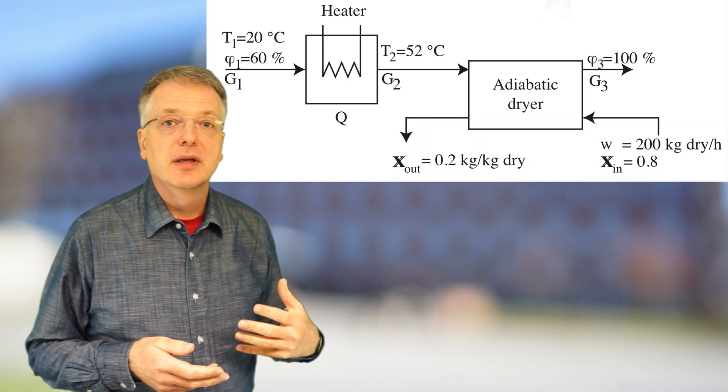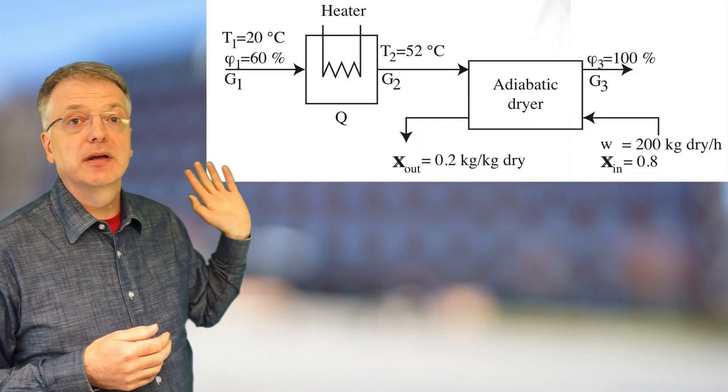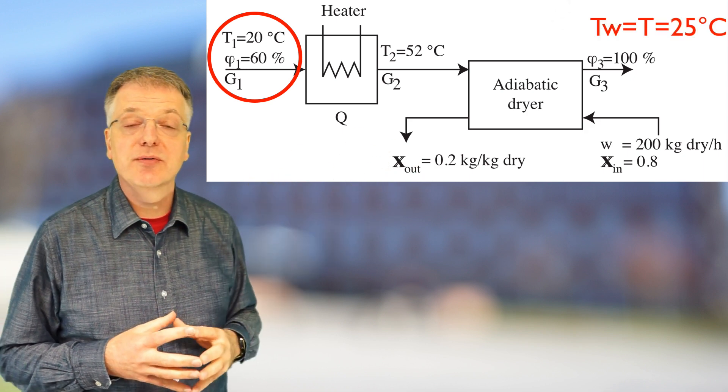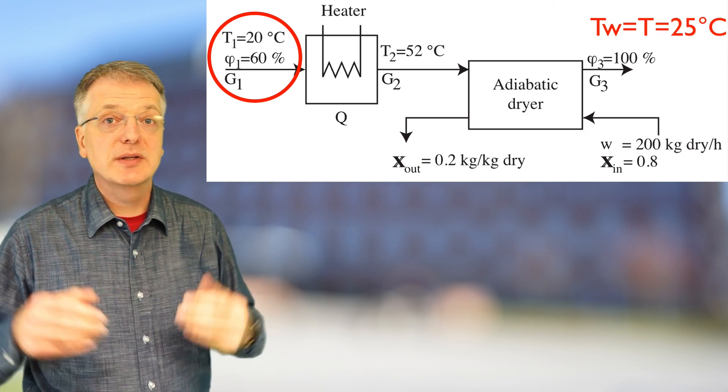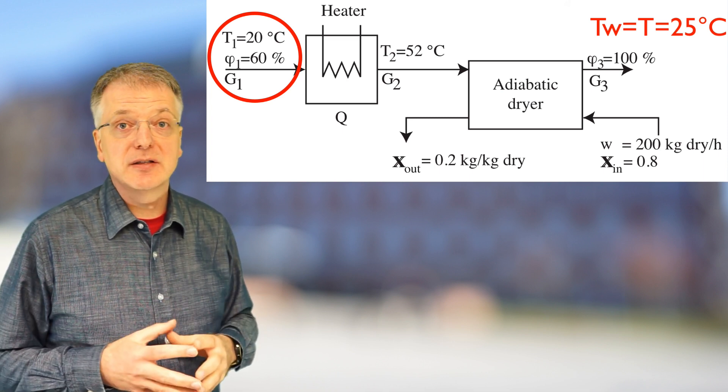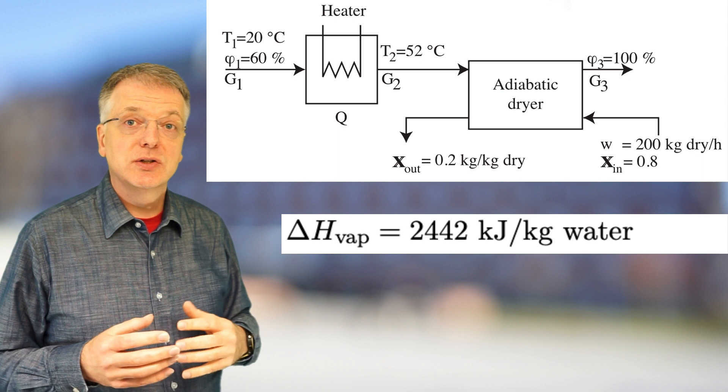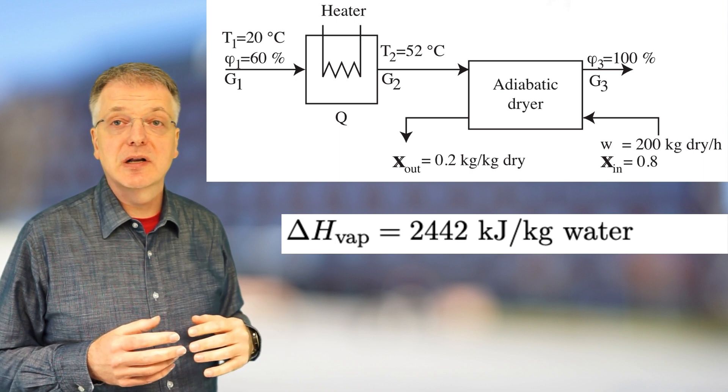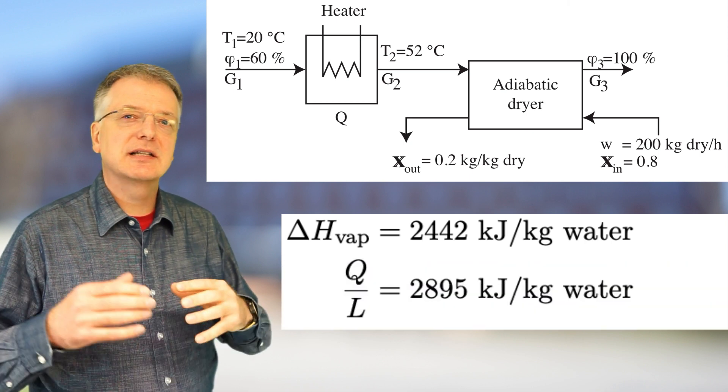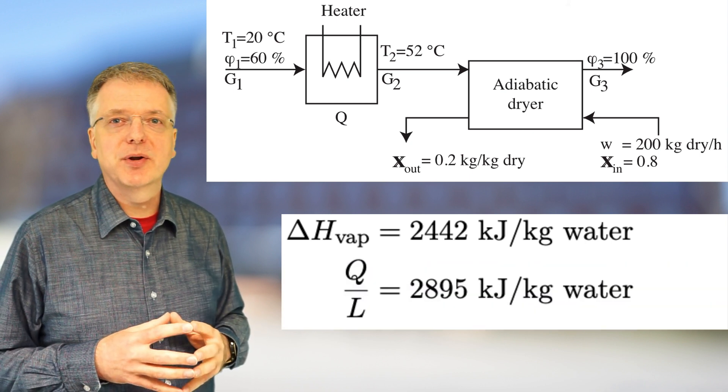To reiterate the task, we had an incoming fresh air at 20 degrees centigrade and an outgoing air with a temperature of 25 degrees and a wet temperature of 25 degrees. The evaporation enthalpy at 25 degrees is 2442 kilojoules per kilogram of water, but our calculations indicated we needed 2895 kilojoules per kilogram evaporated.